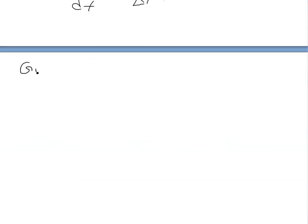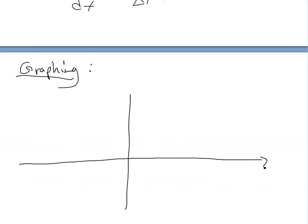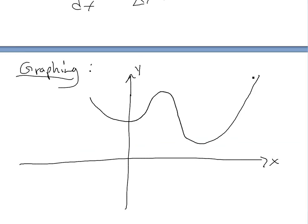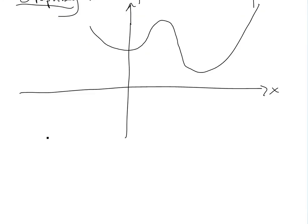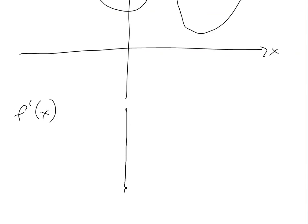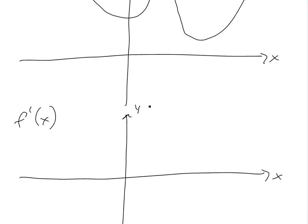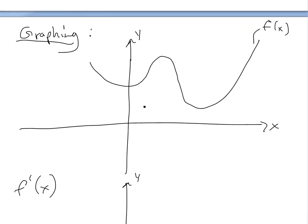Now let's look at some graphing properties. If you have a curve y equals f of x and you want to graph f prime of x, the derivative, one approach is to find all the zero points of f prime. The derivative is the slope, so when the original curve is at its highest apex or lowest point, the slope is zero and the derivative will be zero there.